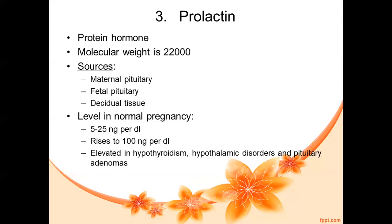The level of prolactin during pregnancy is about 5 to 25 nanograms per deciliter of blood, with a maximum peak of about 100 nanograms per deciliter. However, if the woman has hypothyroidism, hypothalamic disorders, or pituitary adenomas, there is a chance of elevated levels of prolactin in the blood of the pregnant woman.